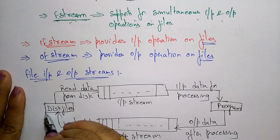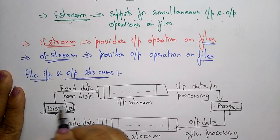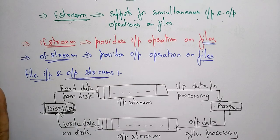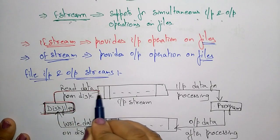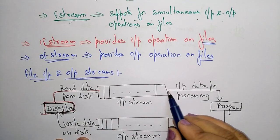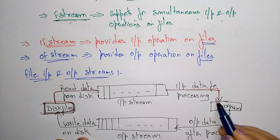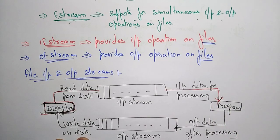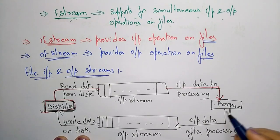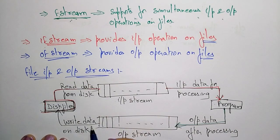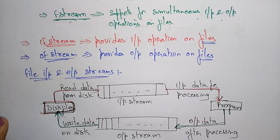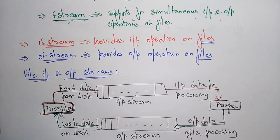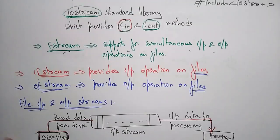Whatever data has to be read or written, it will be from disk files. First, read the data from disk files and place it in the input stream. That input data is processed by the program, and after processing the output goes to the output stream, which then writes the data back onto the disk. This is about file input and output streams.